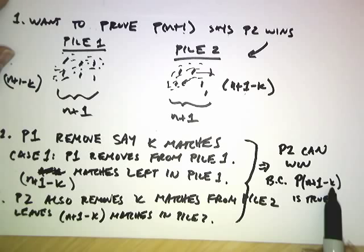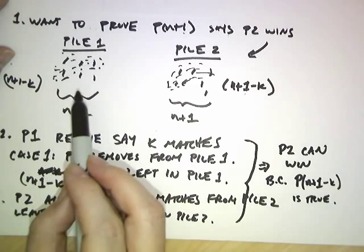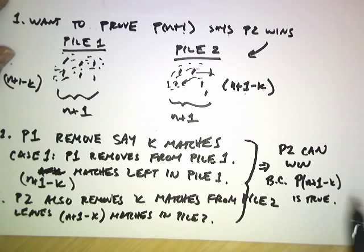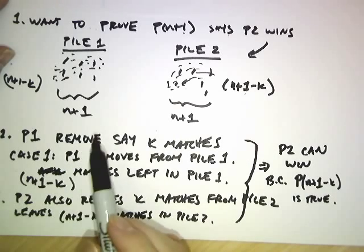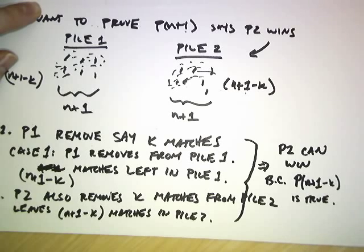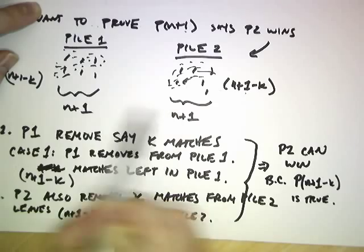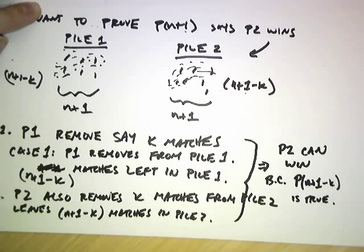If k was 10, we'd be using p of n minus 9. If k is 1, it's because p of n is true. If k is 2, it's because p of n minus 1 is true. If k is 3, it's because p of n minus 2 is true. So we're using the fact that we've assumed p of 1, p of 2, p of 3, and so on up through p of n are all true simultaneously. We've taken the game back to a situation where we can apply the inductive hypothesis.